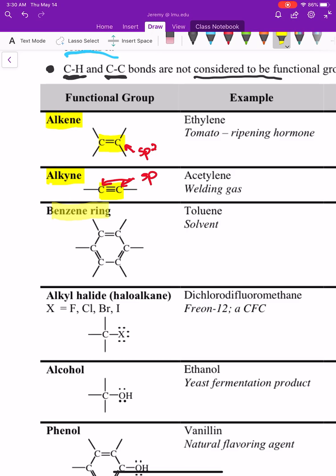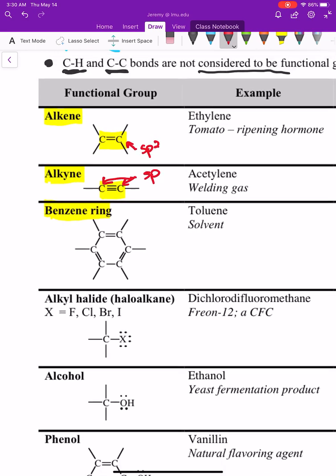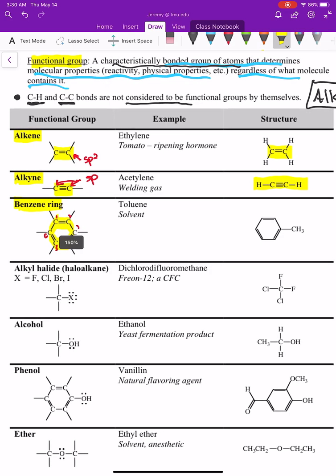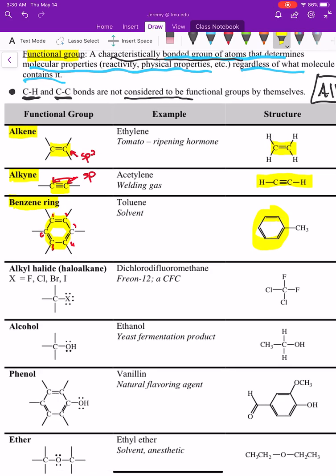The next functional group is called a benzene ring, which is different from an alkene. A benzene ring requires six carbons in a ring with alternating double bonds — that means three double bonds. If you have a ring of eight carbons, that's not a benzene ring. If you have six carbons with only one double bond, that's not a benzene ring either. You must have six carbons in a ring with three alternating double bonds.